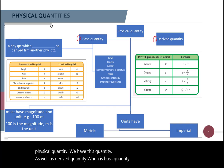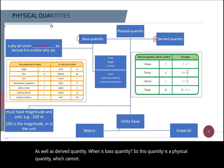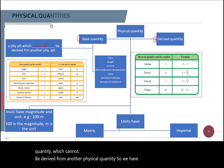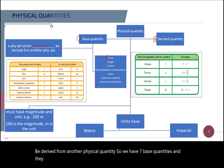So base quantity is a physical quantity which cannot be derived from another physical quantity. So we have seven of these quantities, and they are time, length, current, thermodynamic temperature, mass, luminous intensity, and amount of substance.